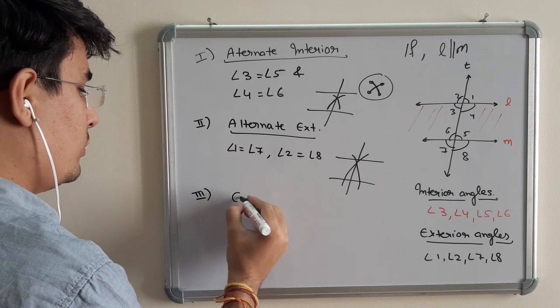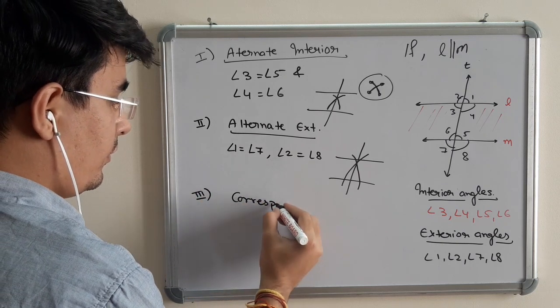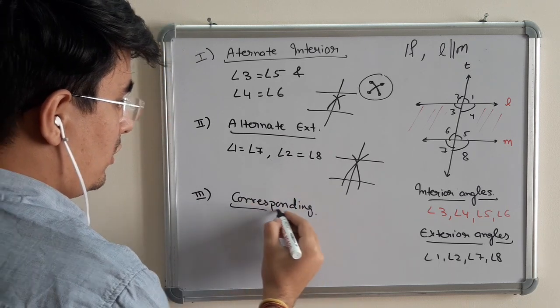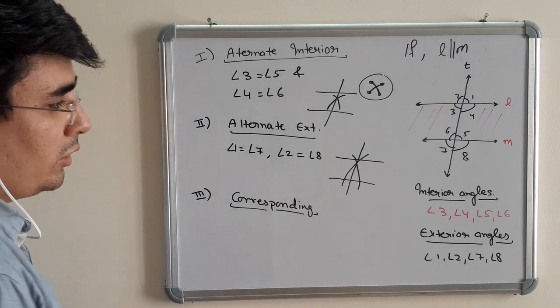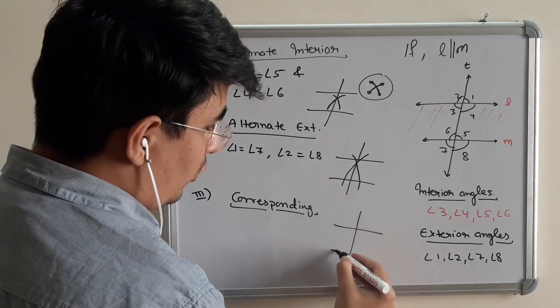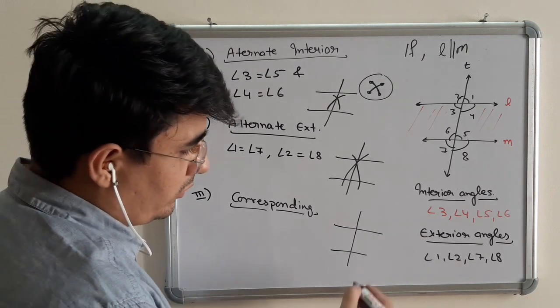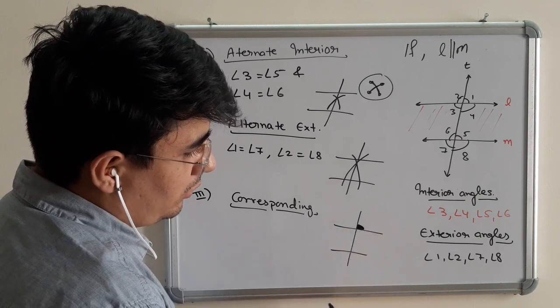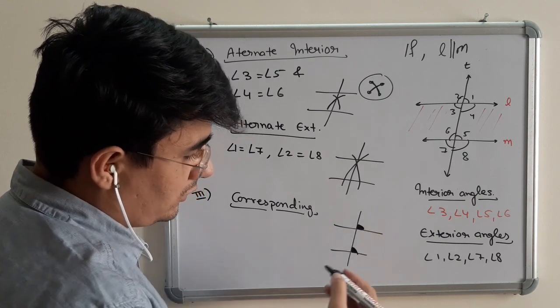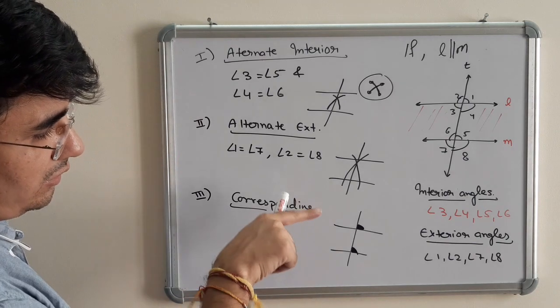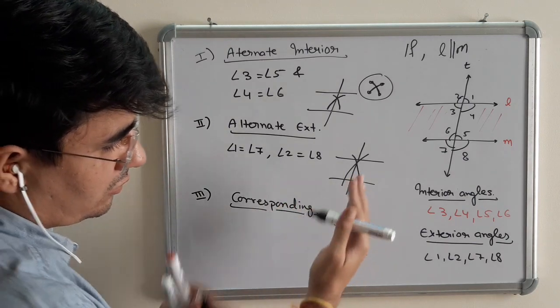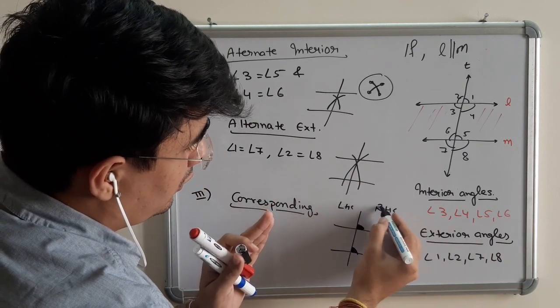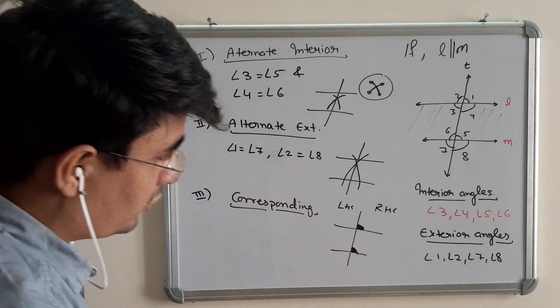So, third property is corresponding. Corresponding angles. Corresponding angles definition is one angle should be in exterior and one in the interior but on the same side. Corresponding angles. So, let's listen to this again. One exterior, one interior but on the same transversal. Either on the right side or on the left hand side. Okay.